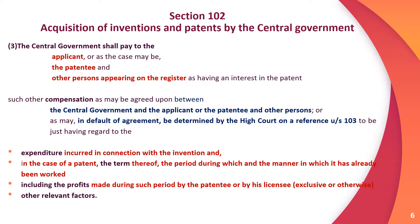Section 102 Subsection 4 sets out factors to be regarded in determining compensation: the expenditure incurred in connection with the invention; in the case of a patent, the term thereof, the period during which and the manner in which it has been worked, including the profits made during such period by the patentee or licensee (exclusive or otherwise); and other relevant factors.